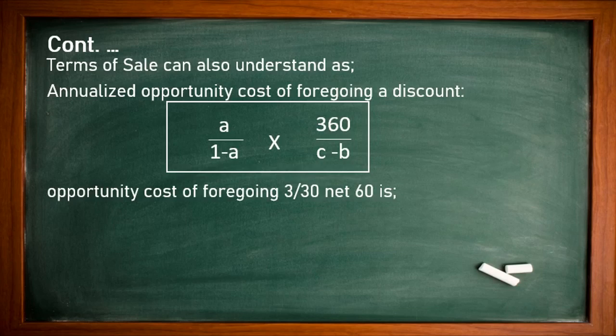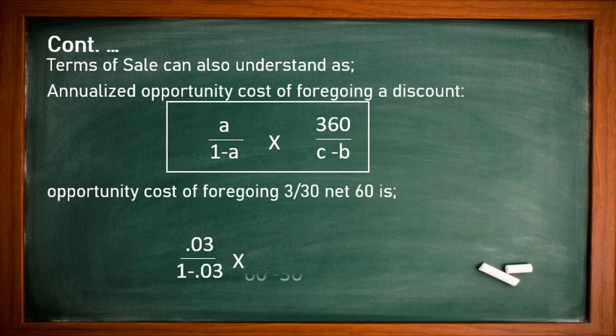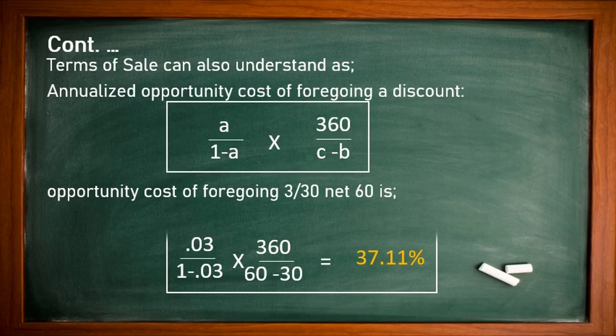Using the previous example of 3/30 net 60, let's put the values into the formula: 0.03 divided by (1 minus 0.03), multiplied by 360 divided by (60 minus 30). The result is 37.11%. So the opportunity cost of forgoing the discount is 37.11%.